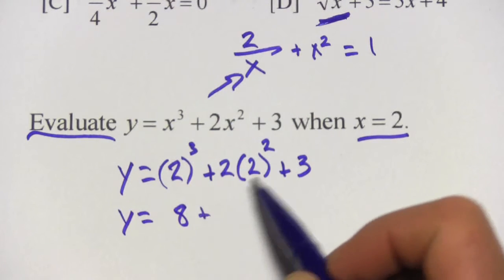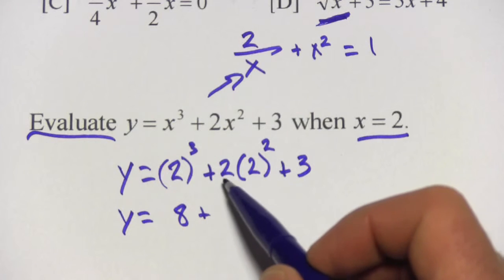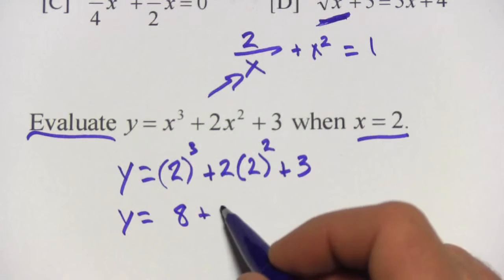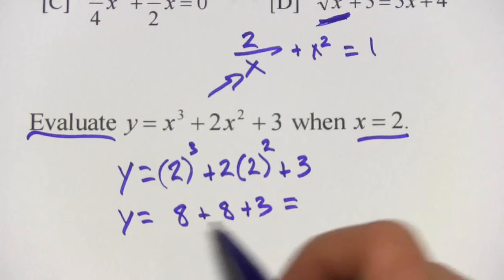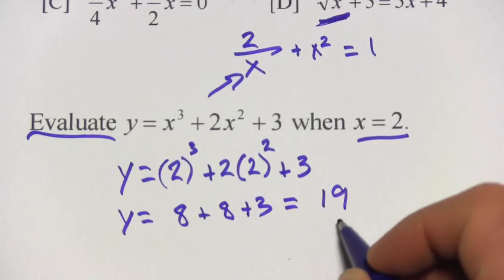We have to do the exponent first. 2 squared is 4 and then multiply that by 2 again. Well, we get another 8 and then plus 3. So this is 8 plus 8 plus 3 or 19.